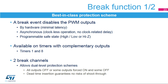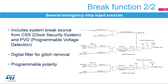This slide presents how the brake function sources are managed. Multiple brake sources can be combined for triggering a brake event. Two system-level sources can be selected: the clock security system, or CSS, indicating an external clock failure, and the programmable voltage detector, or PVD.